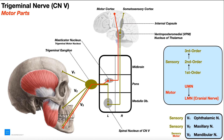In the previous video, we looked at the sensory components of cranial nerve 5, which is the trigeminal nerve. Recall the trigeminal nerve had both sensory and motor components. The trigeminal nerve is broken up into three separate parts: V1, the ophthalmic nerve; V2, the maxillary nerve; and V3, the mandibular nerve. The V comes from the Roman numeral 5.